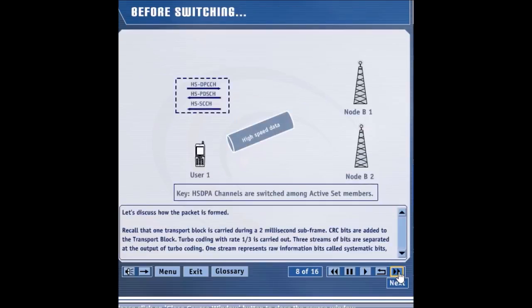Before a handover occurs, the UE is doing an HSDPA operation with node B A. In other words, it is observing the HSDSCH and HSSCCH from node B A and node B A is observing the HSDPCCH from the UE.